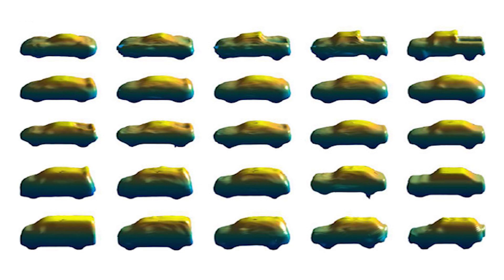It can also do what we call hallucination. For instance, if you show it a car image in 2D and then a truck image in 2D, and ask it to come up with something in between a car and a truck, it can come up with something between a car and a truck in 3D.